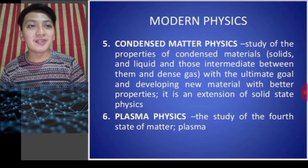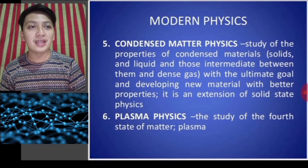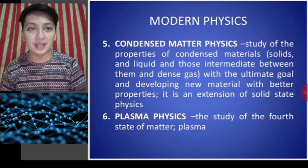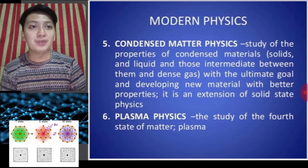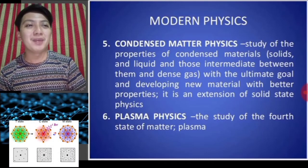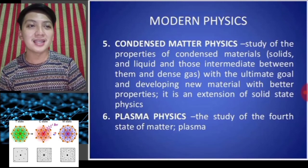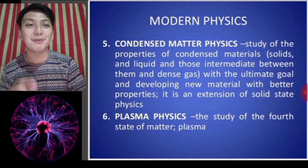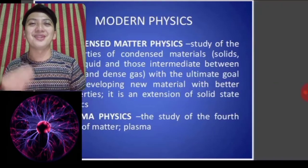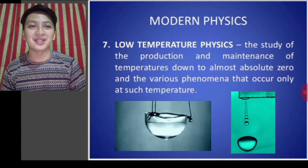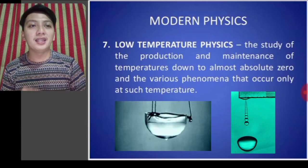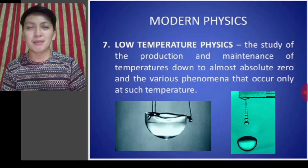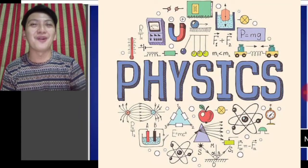Condensed matter physics is the study of properties of condensed materials — solids, liquids, and those intermediate between them, including dense gas — with the ultimate goal of developing new materials with better properties. It is an extension of solid state physics. Plasma physics is all about the fourth state of matter, which is plasma. Low temperature physics is the study of the production and maintenance of temperatures down to almost absolute zero, and the various phenomena that occur only at such very cold temperatures.